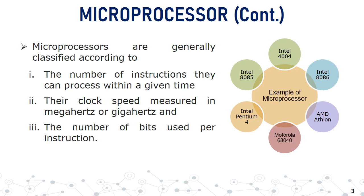We are surrounded by lots of types of microprocessors in our daily life. History says that the first microprocessor was the Intel 4004, designed by four very talented engineers: Marcian Hoff, Federico Faggin, Stanley Mazor, and Masatoshi Shima. After the first one, the Intel 8085, Intel 8086, Intel Pentium series, and Intel Core i series came respectively and played a vital role in the evolution of computer technology.